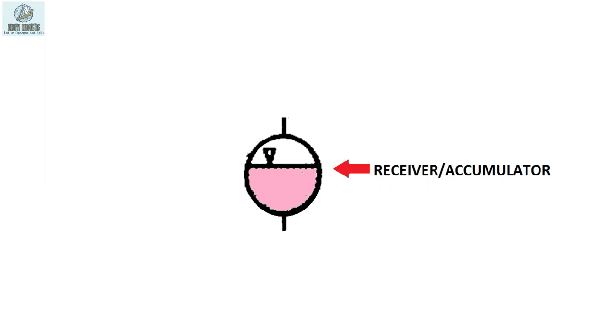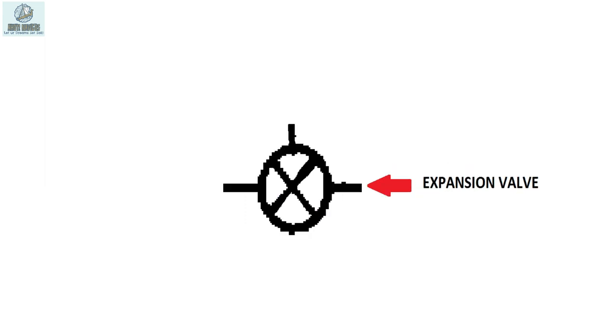Receiver. It is used to collect the condensed cargo. Expansion valve. Expansion valve is used to drop the line pressure to tank pressure. The drop in pressure also causes cooling.